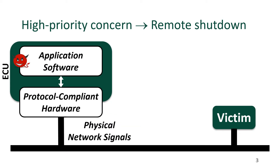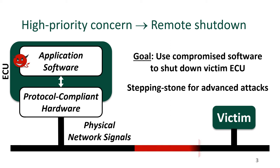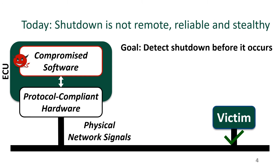One type of attack that's been a concern is the remote shutdown attack, where an attacker uses the compromised software of one ECU to shut down another victim ECU. While this attack alone can severely disrupt a vehicle, a shutdown attack could be used as a stepping stone for more advanced attacks, such as a masquerade attack. The automotive industry has responded to these shutdown attacks with several modern defenses.